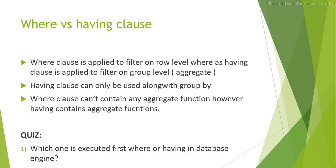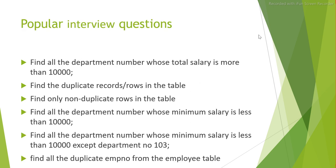For the quiz: answer in the comments — which one is executed first, the HAVING clause or the WHERE clause? How does the database engine, for example Oracle, evaluate these? Which is executed first and which is executed later — WHERE or HAVING? I'll cover the popular interview questions about duplicate rows in a separate session, as that needs good amount of time.